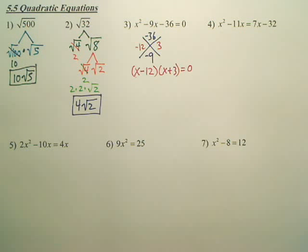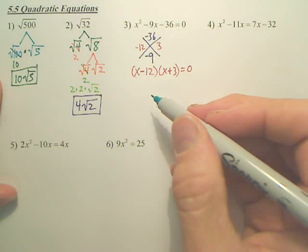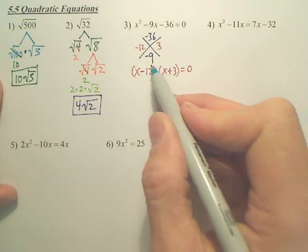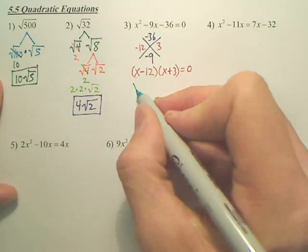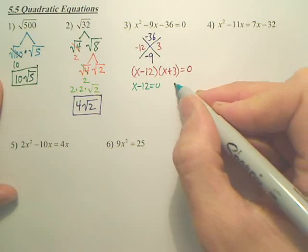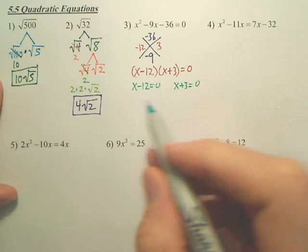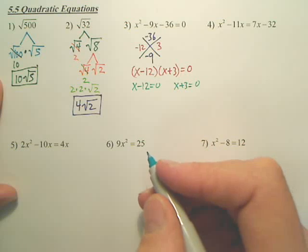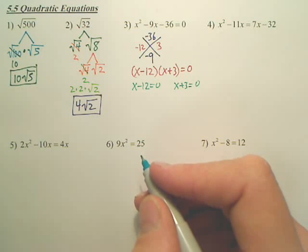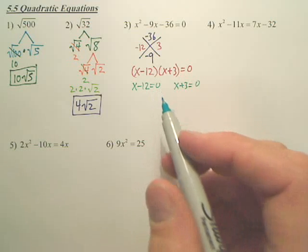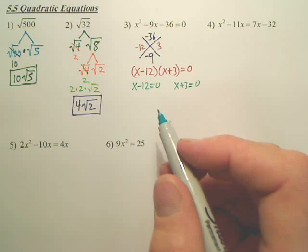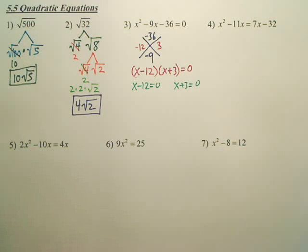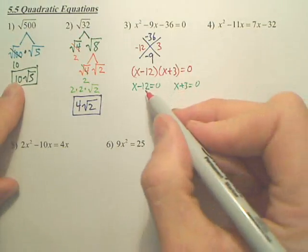Why did I do that? There's something called the zero product property. I have two things multiply to get 0. Either x minus 12 has to equal 0, or x plus 3 has to equal 0. One of those has to equal 0. In order for two numbers to multiply to get 0, doesn't one have to be 0? When you multiply two numbers to equal 0, one of the numbers has to be 0. So either this equals 0 or this equals 0. Both of those are my answer. I set each piece equal to 0.